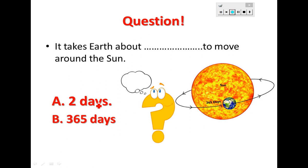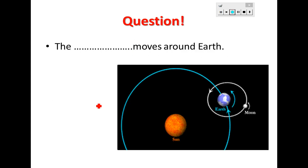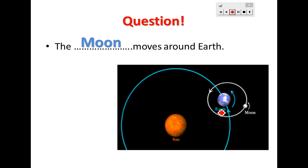I'm sure you are saying the answer out loud — yes, it's 365 days! Third question: what moves around Earth? You have a picture here to help you. What is moving around Earth? The Moon — correct! The Moon moves around Earth.